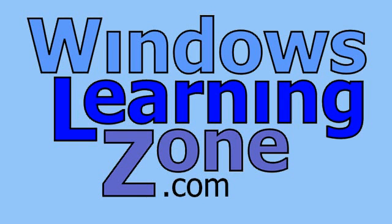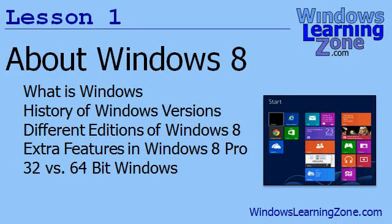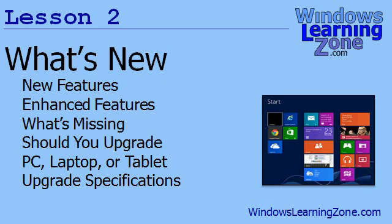Now let's take a more detailed look at what will be covered in today's class. In Lesson 1, we're going to learn about Windows 8 — what Windows is, the history of the different versions of Windows, the different editions of Windows 8, the extra features found in Windows 8 Professional, and the difference between 32-bit and 64-bit Windows. In Lesson 2, we're going to talk about what's new in Windows 8, covering new features, enhanced features, what's missing that was in previous versions, whether or not you should upgrade an old machine to Windows 8, whether you should buy a PC, laptop, or tablet, and the upgrade specifications.